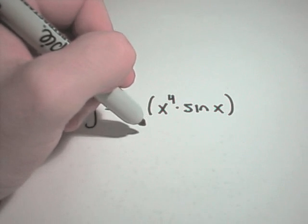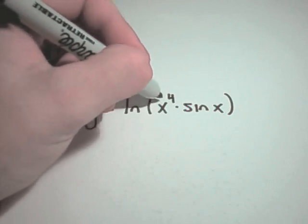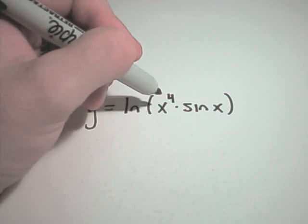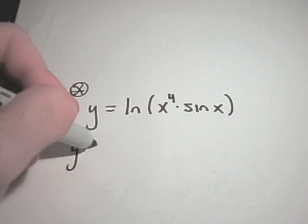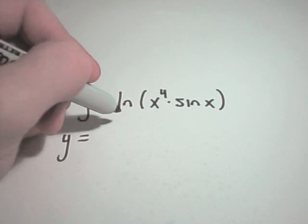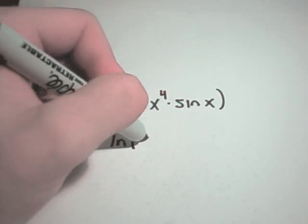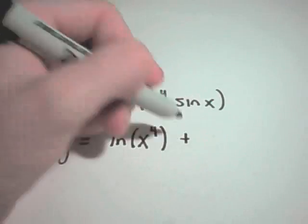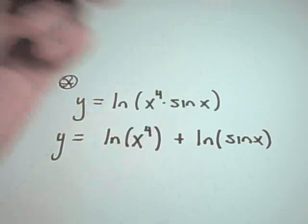You could go about doing this by saying the derivative is 1 over x to the 4th times sine of x. Then you'd have to multiply by the derivative of the inside, in which case you would have to use the product rule. An easier thing to do is to rewrite this using properties of logarithms. If you have multiplication inside a logarithm, you can break that up as addition.